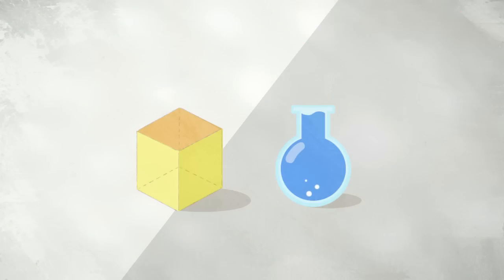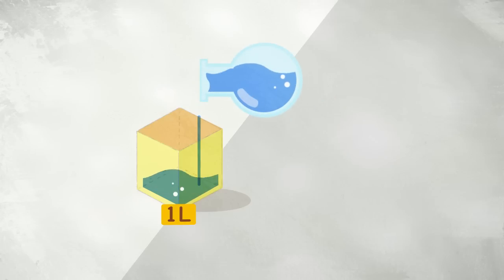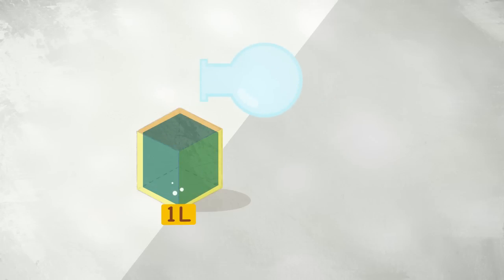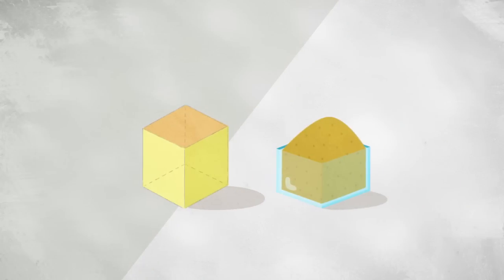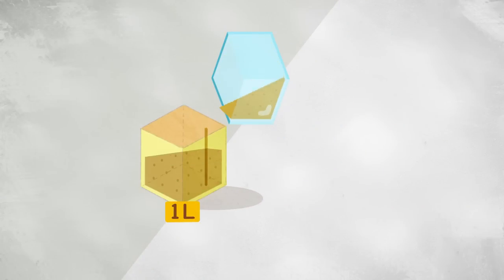For example, here is a water bottle. The label on it says 1L, 1 liter. This means that 1 liter of water, sand, or anything else could fit in it.